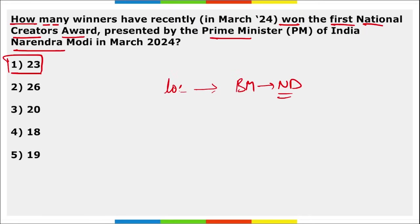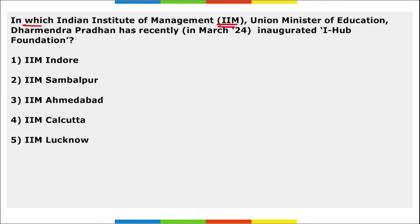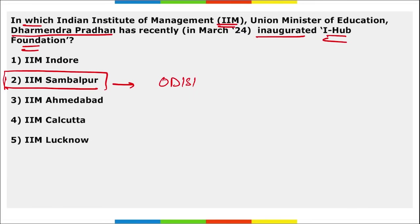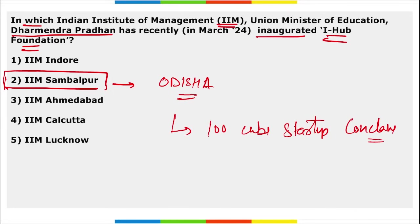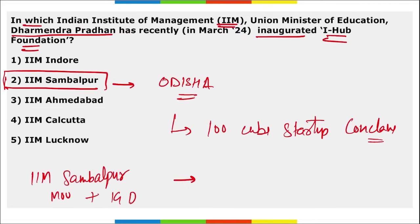In which IIM has Union Minister of Education Dharmendra Pradhan recently inaugurated the iHub Foundation? It was inaugurated at IIM Sambalpur, located in the state of Odisha. This iHub Foundation was launched during the 100 Cube Startup Conclave held at IIM Sambalpur on 1st of March. Under an MOU, IIM Sambalpur and IG Drones will launch the first ever Drone Centre of Excellence, to be located at the IIM Sambalpur campus in Odisha.